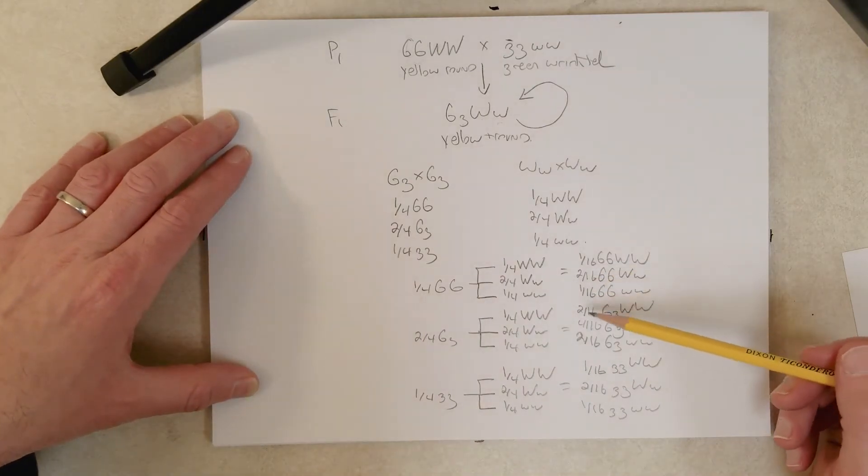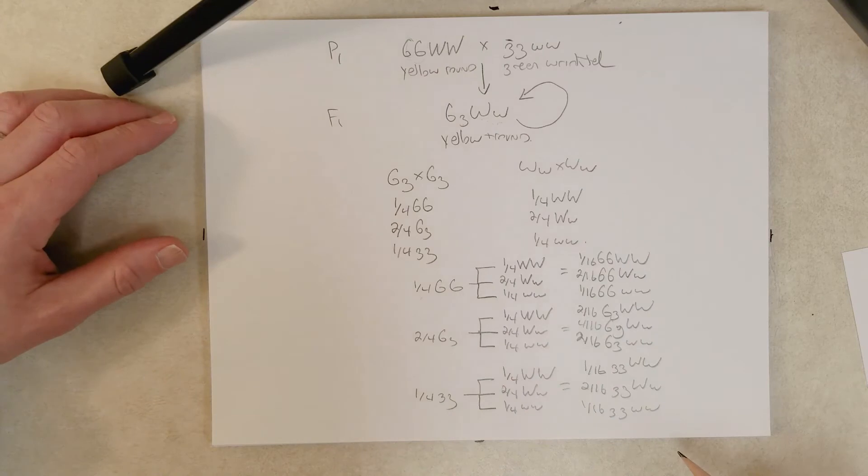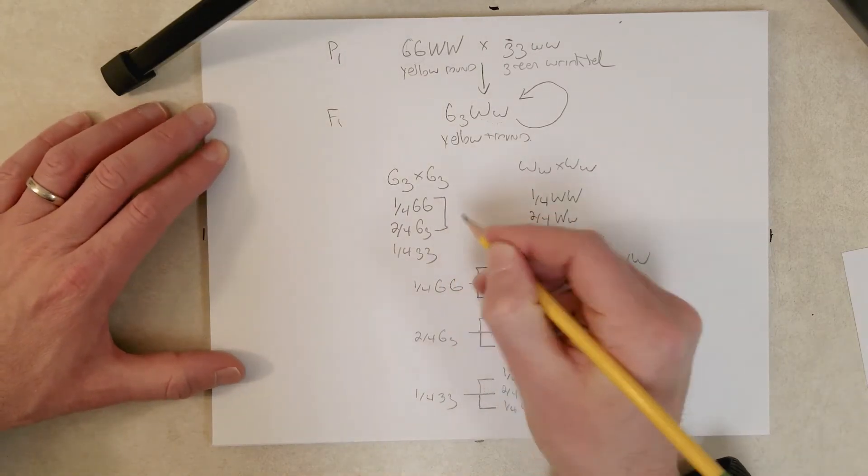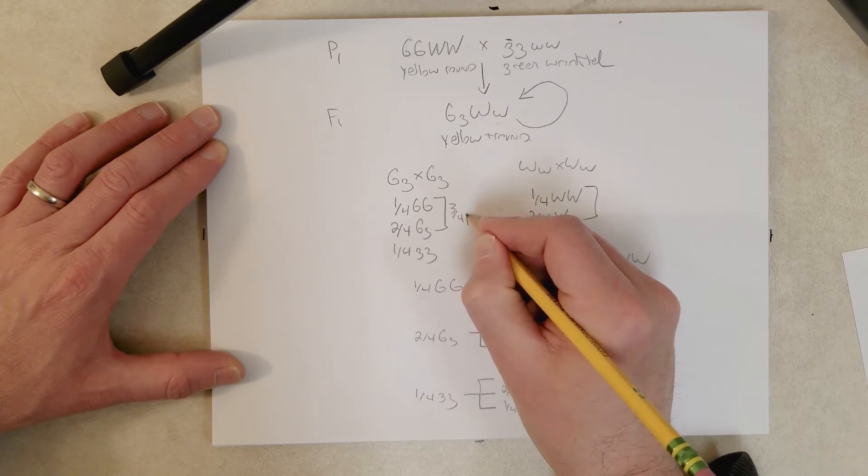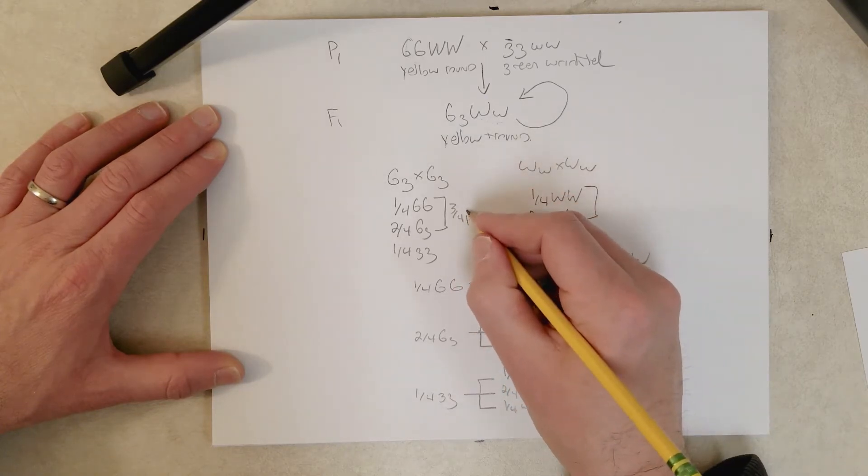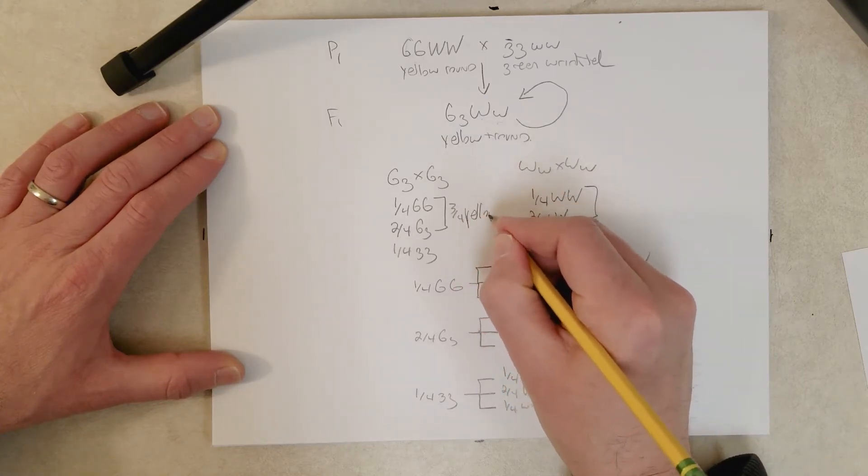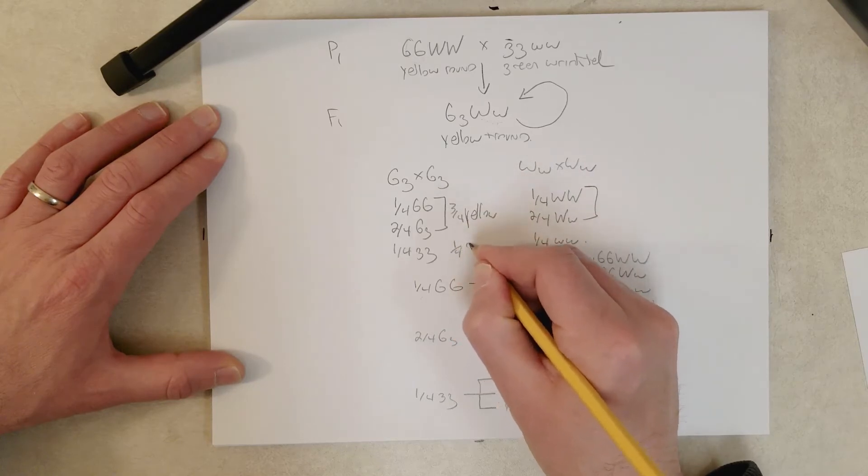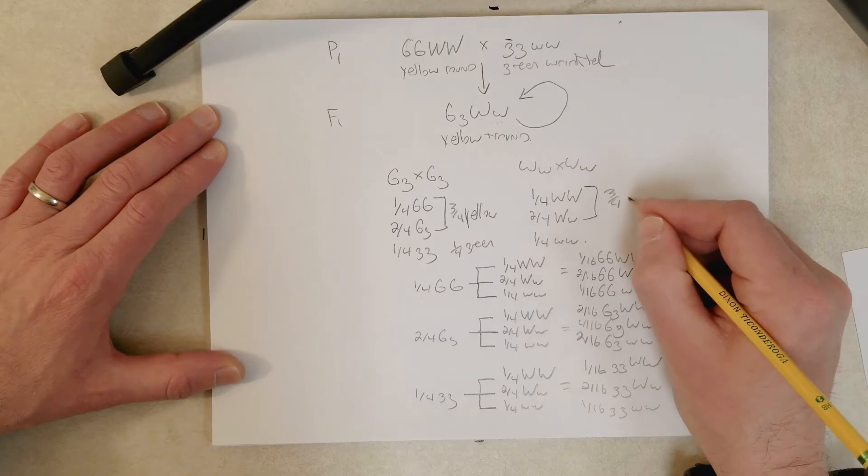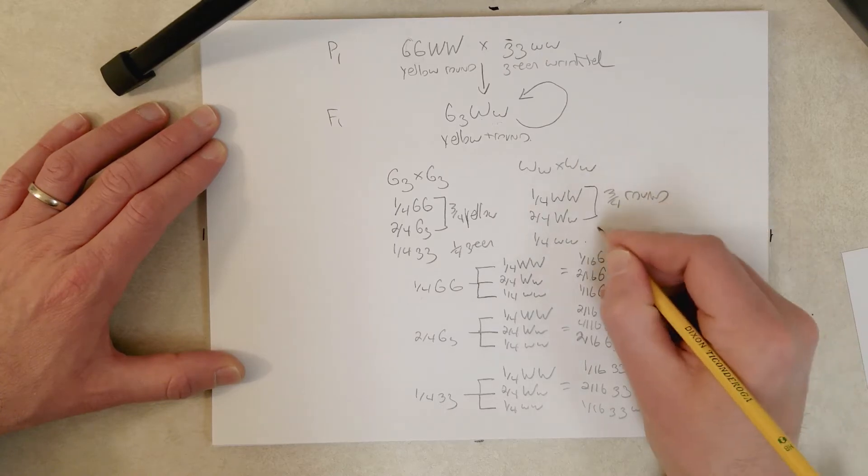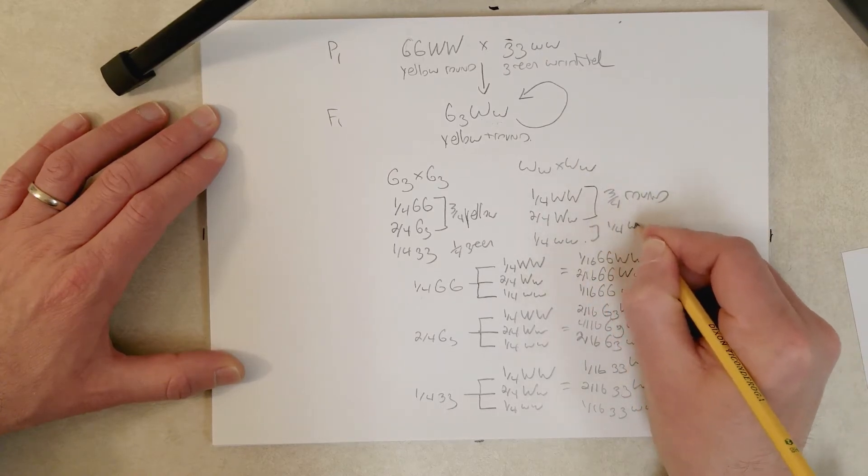Okay, so here we have our genotypic ratio, and we could do the same thing for the phenotypic ratio. And there, what we would do is just use these ratios here, three-quarter yellow, one-quarter green, three-quarter round, one-quarter wrinkled.